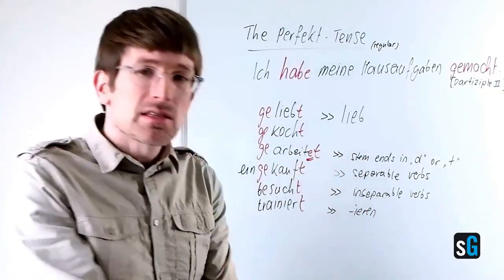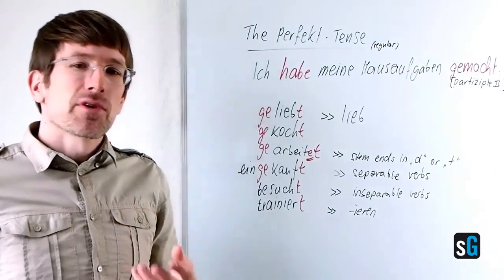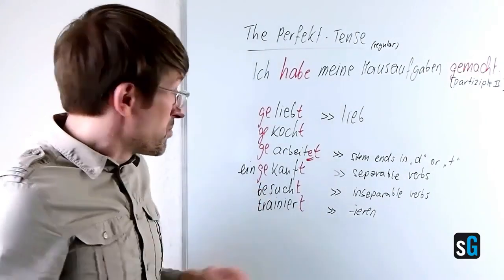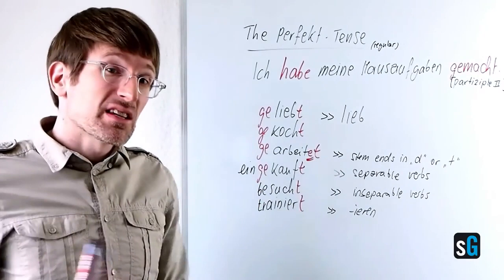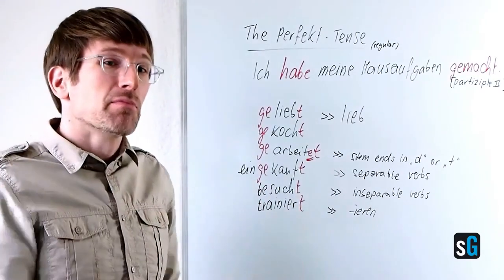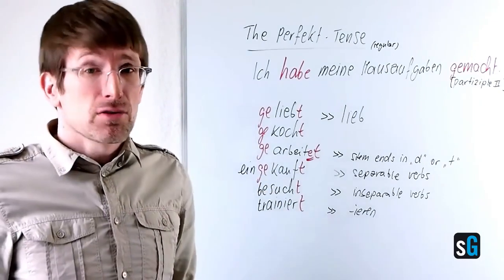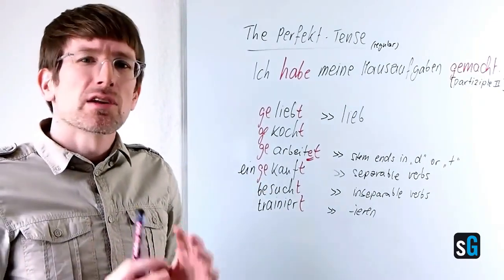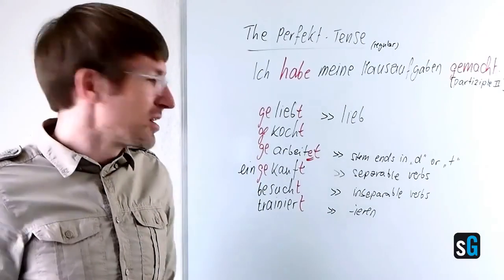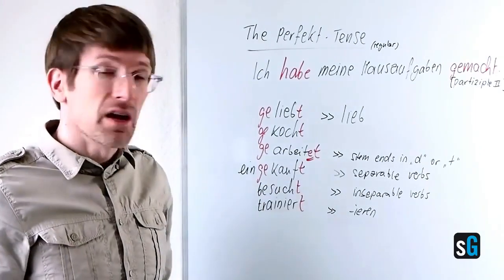And the inseparable verbs, they behave absolutely different. The be-, er-, ver-, zer-, ge-, miss - the inseparable prefixes, these little tiny parts here - they don't like ge, so they just don't take it. They don't allow any other ge in the sentence,